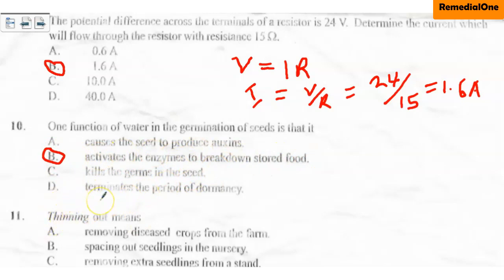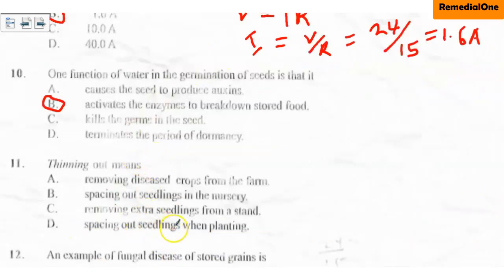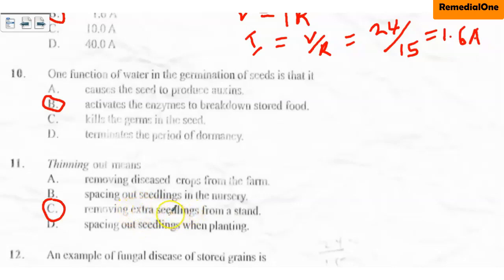Question eleven: thinning out in agriculture means A. removing diseased crops from the farm, B. spacing out seedlings in the nursery, C. removing extra seedlings from a stand, D. spacing out seedlings when planting. The correct option is C. Thinning out means removing extra seedlings from a stand so there is no overcrowding — because overcrowding causes competition for nutrients. The remaining seedlings will then have enough air, nutrients, and will grow very well.